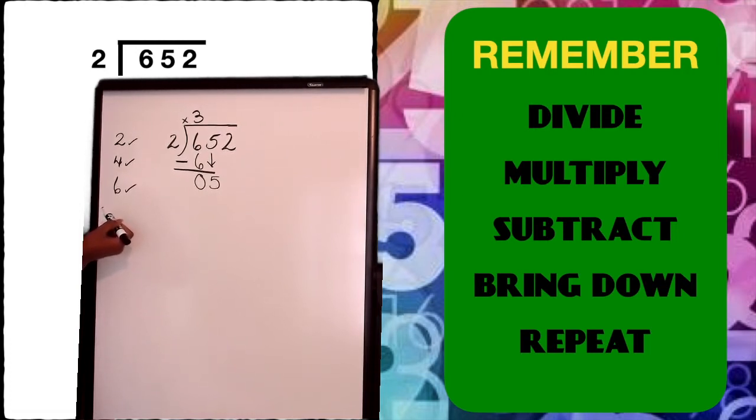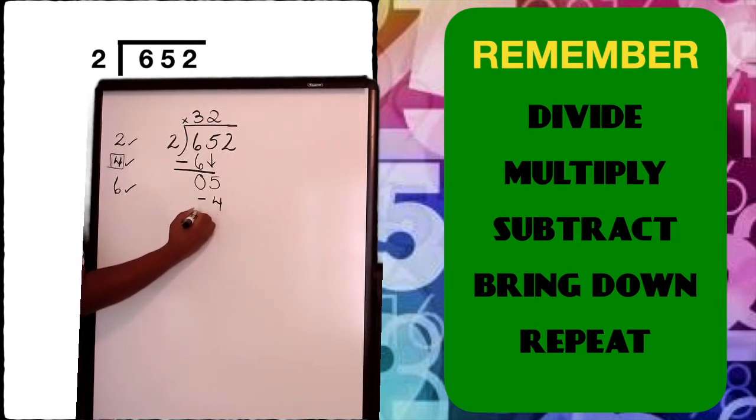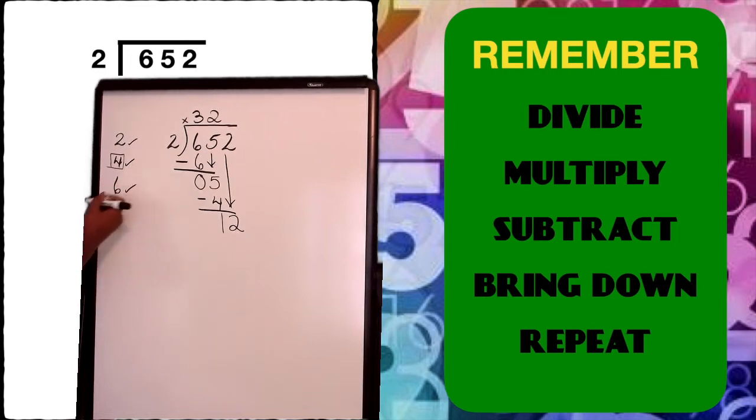Two into five. And I can look over here to help me, seeing that I already listed some of the multiples of two. I know that four is the closest number without going over the number five. So that means that was one, two groups of twos in five. I put two in my working part. Then I multiply. Two times two would give me four.